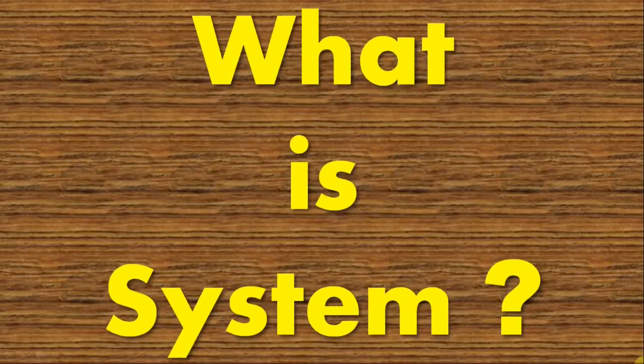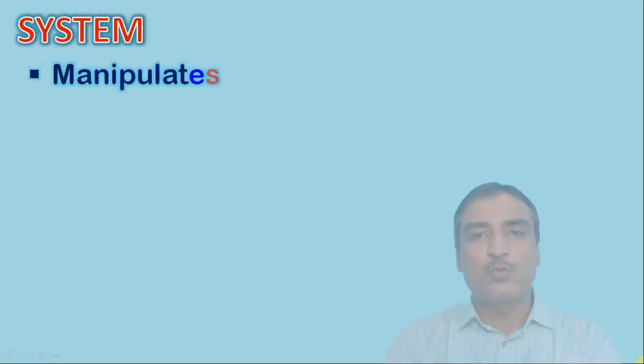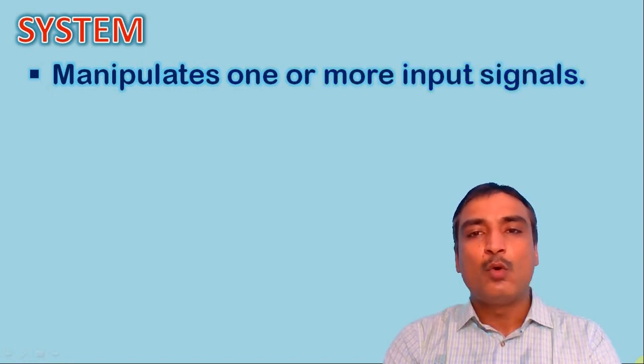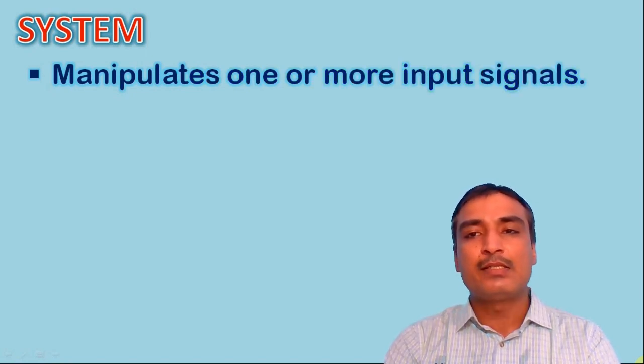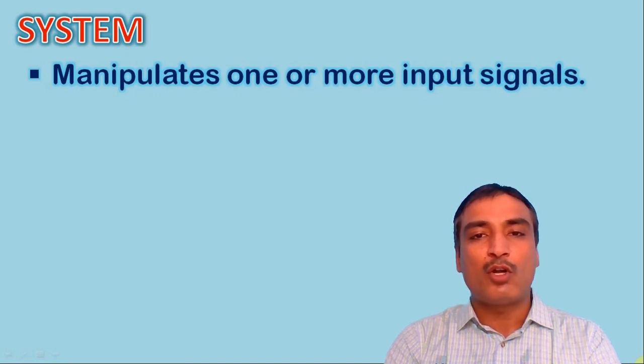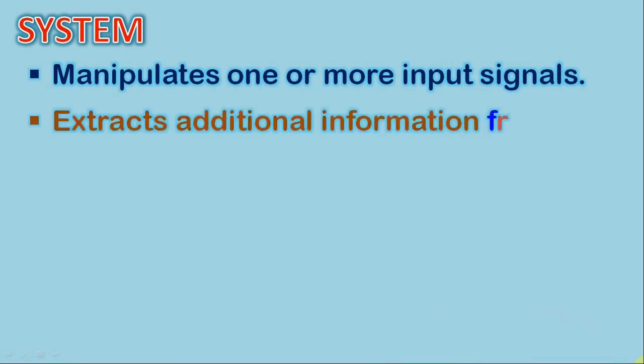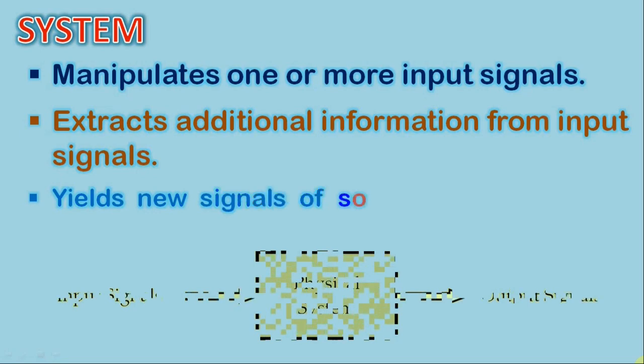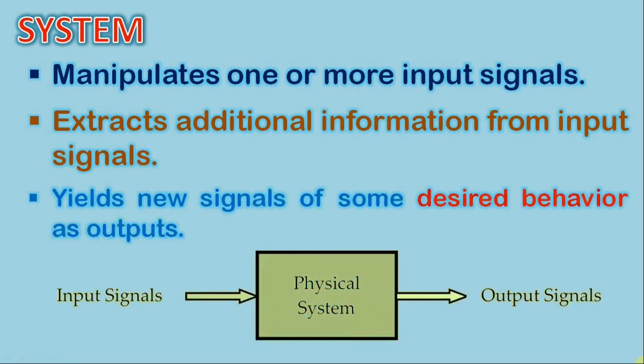Now, we have another question: what is a system? The system is one which manipulates one or more input signals in order to extract additional information from them, thereby yielding new signals of some desired behavior as outputs.